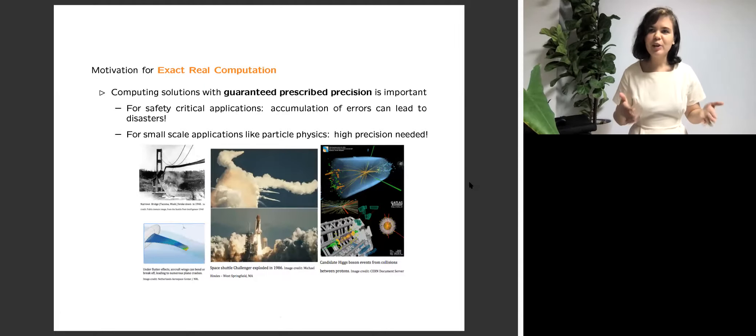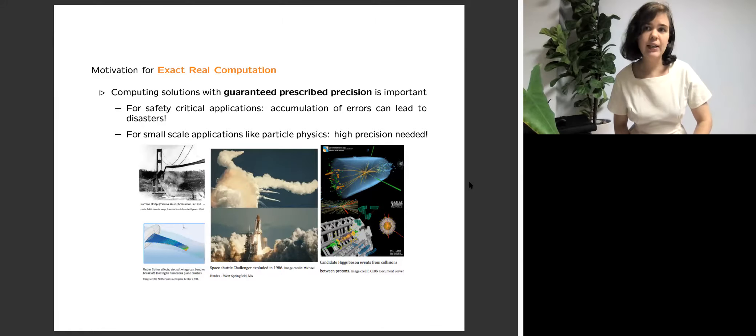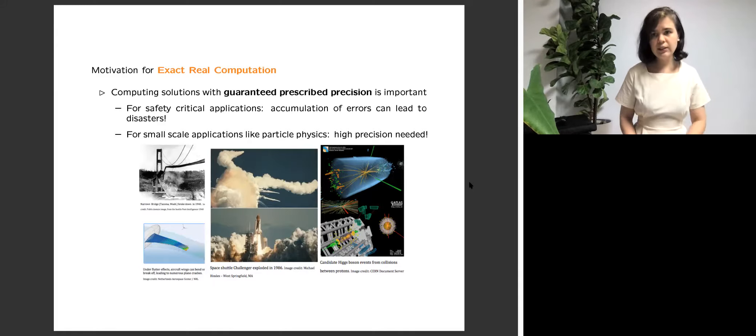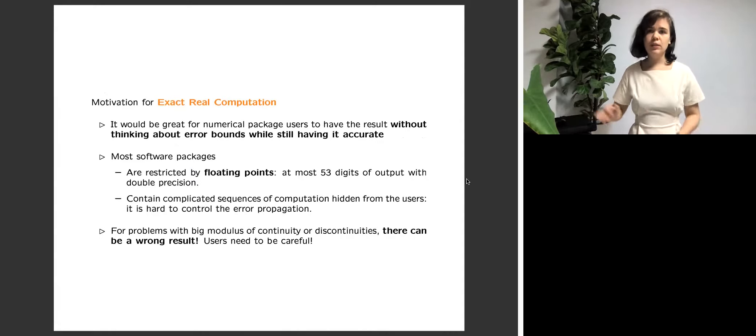In applications, computing with guaranteed prescribed precision is very important. The first main reason is if we don't know how to control our error bounds and don't have the result precise, we can run into trouble and even accidents and disasters like collapse of bridges, crashes of airplanes, explosion of shuttles and so on. The second main reason is if we want to compute something for very small scale applications like in particle physics, it's very desirable to have arbitrary small and very high precision. So, summarizing, it would be really great for numerical packages which do the computation to have the results as accurate as possible and have full control over the possible error bounds.